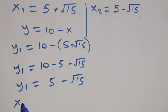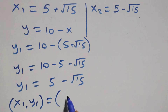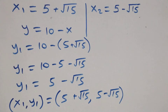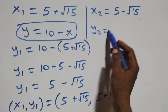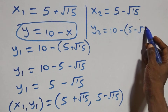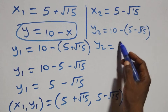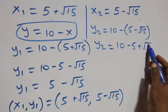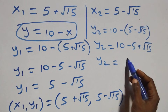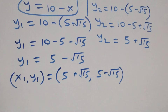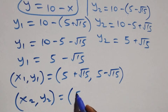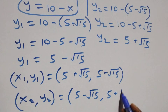The first solution set (x₁, y₁) is (5 plus root 15, 5 minus root 15). For the second solution, y₂ equals to 10 minus x₂, which is 10 minus (5 minus root 15), giving y₂ equals to 5 plus root 15. So the second solution set (x₂, y₂) is (5 minus root 15, 5 plus root 15).